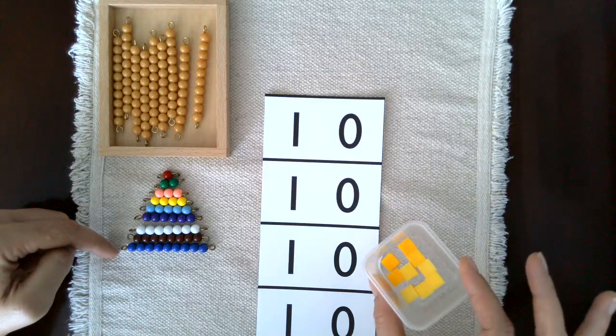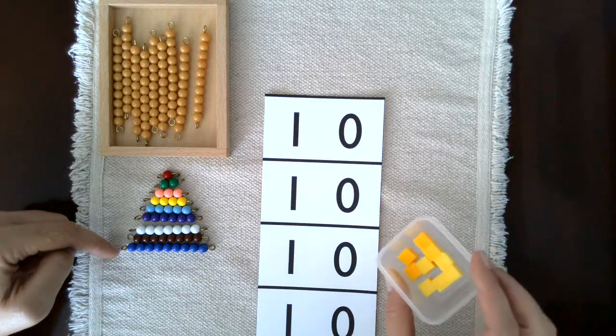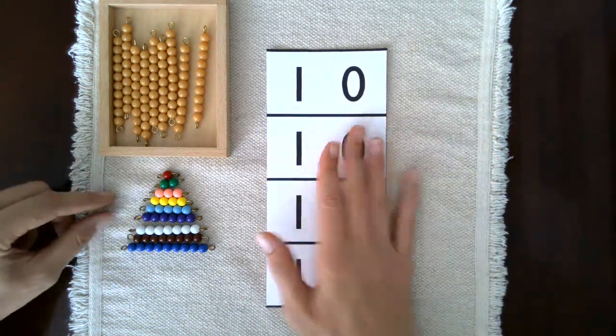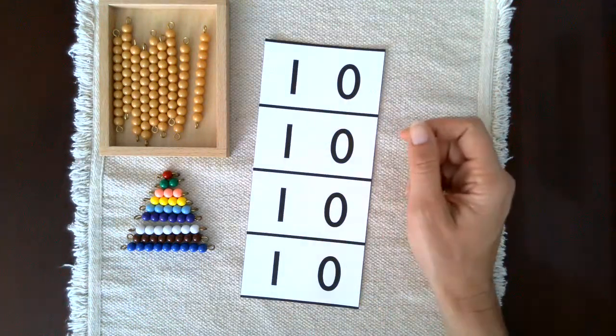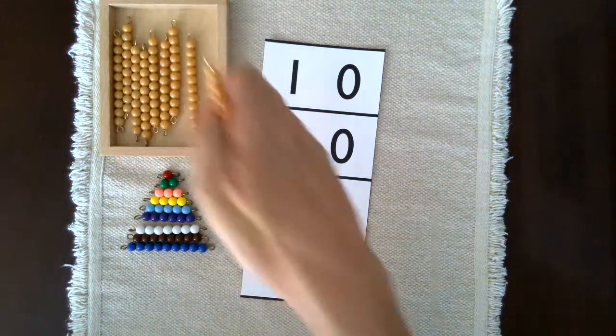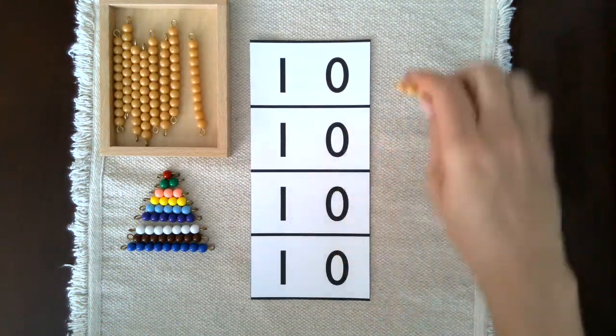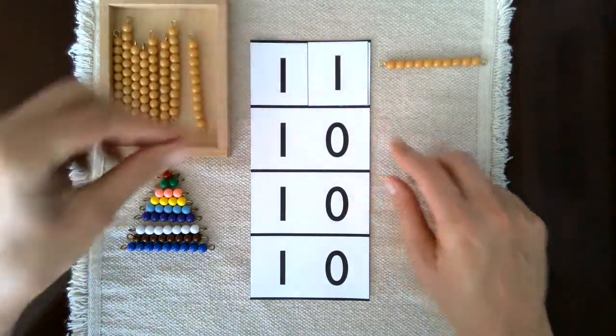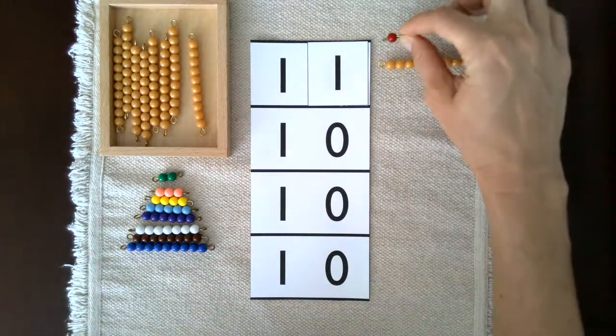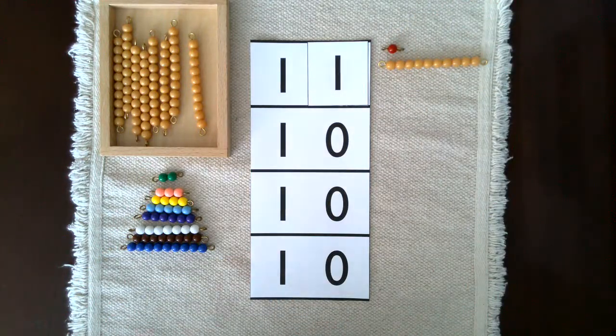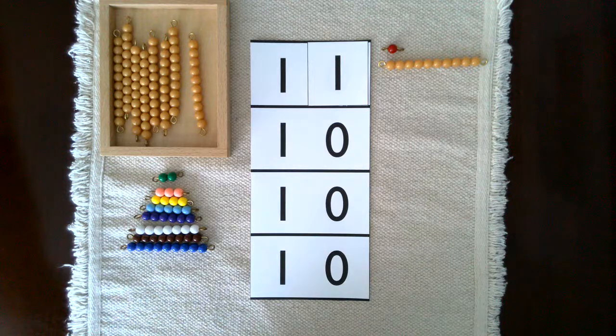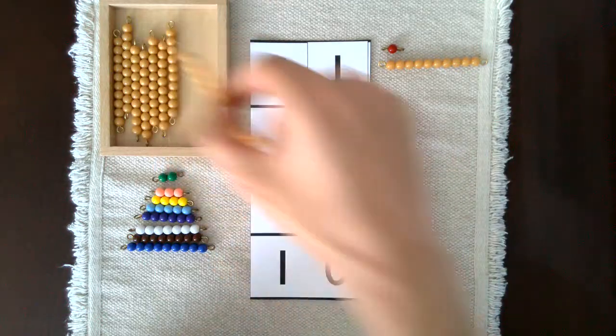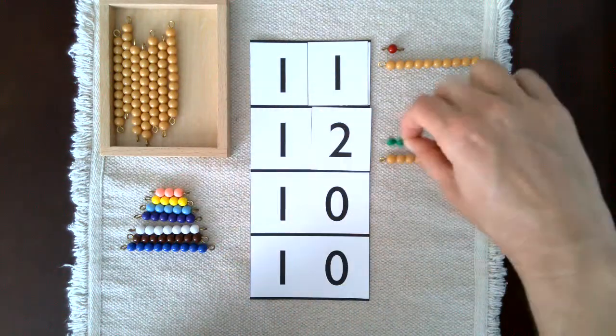You can also use loose unit cubes or snap cubes, okay. And to start with we'll put one 10 next to the 10. 10 and 1, do you remember what that makes? Yes, that's 11. 11. 10 and 2 are 12.